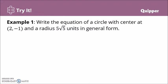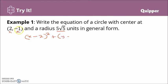Let's have another example. Write the equation of a circle with center at (2, −1) and a radius of √5 units in general form. Here h = 2, k = −1, and r = √5. We first write the standard form: (x − 2)² + (y + 1)² = (√5)². The right side, (√5)², equals 5.